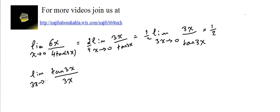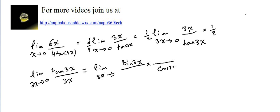This means 3x approaches 0 as well. Why is this also equal to 1? It's like the sine(u)/u rule — limit of sine(u) over u as u approaches 0 — because we can change tangent(3x) into sine(3x) over cosine(3x). So tangent is sine over cosine, and we have 3x in the denominator: sine(3x) over cosine(3x) equals tangent(3x), with 3x remaining in the denominator.